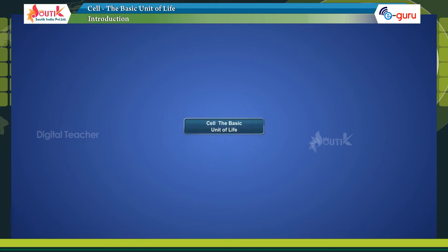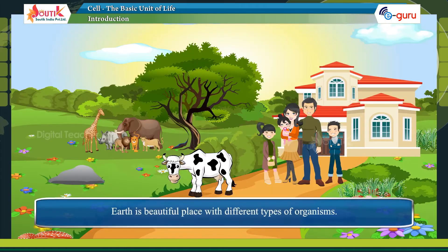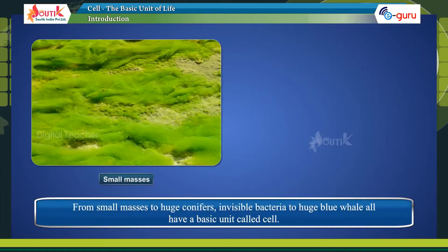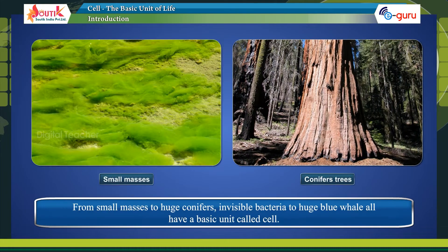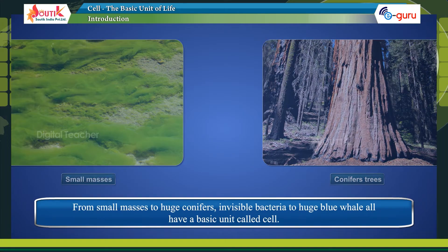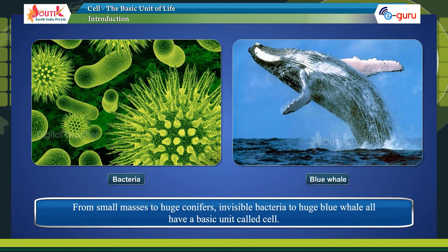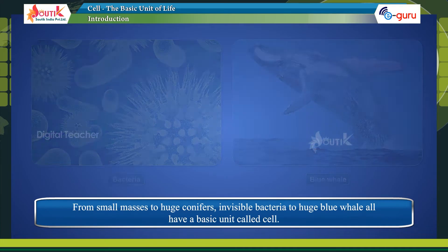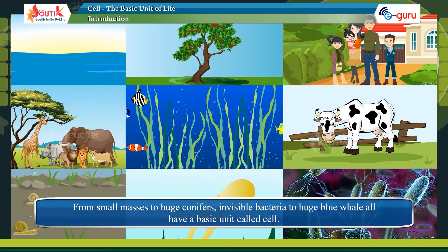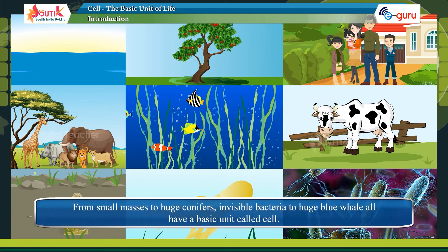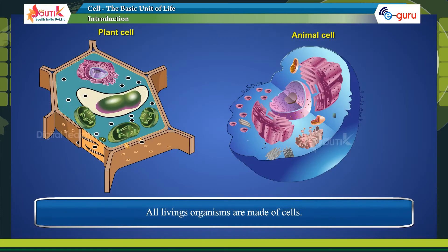Cell: the basic unit of life. Earth is a beautiful place with different types of organisms, from small mosses to huge conifers. Invisible bacteria and the huge blue whale all have a basic unit called the cell. All living organisms are made of cells.